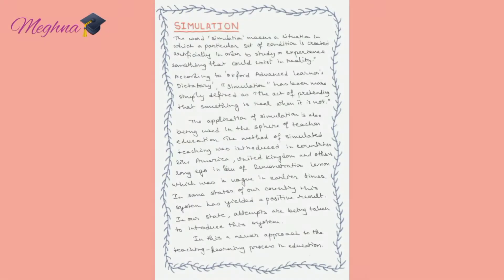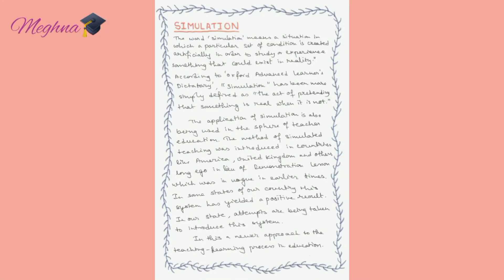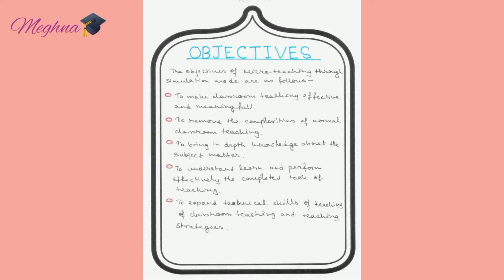Simulation means a situation in which a particular set of conditions is created artificially in order to study or experience something that could exist in reality. Simply put, simulation is the act of pretending that something is real when it is not. Presently, the application of simulation is also being used in the sphere of teaching education. The main objective of micro teaching is to modify the teacher's behavior according to specified objectives, making classroom communication more effective and more interactive.